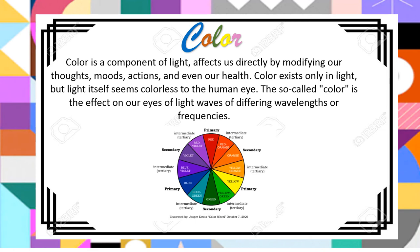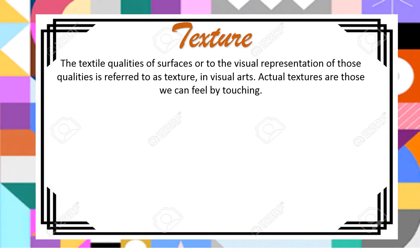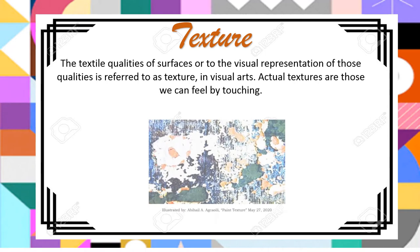We have primary colors and secondary colors. Texture — the texture qualities of surfaces, or the visual representation of those qualities, is referred to as texture in visual arts. Actual textures are those we can feel by touching. Here is an example of a painting full of texture.